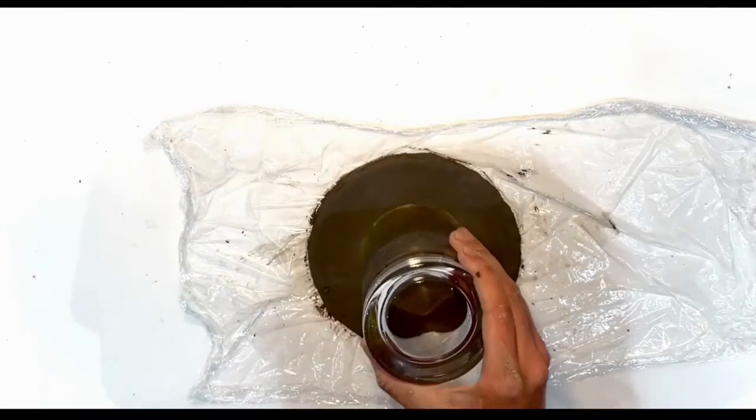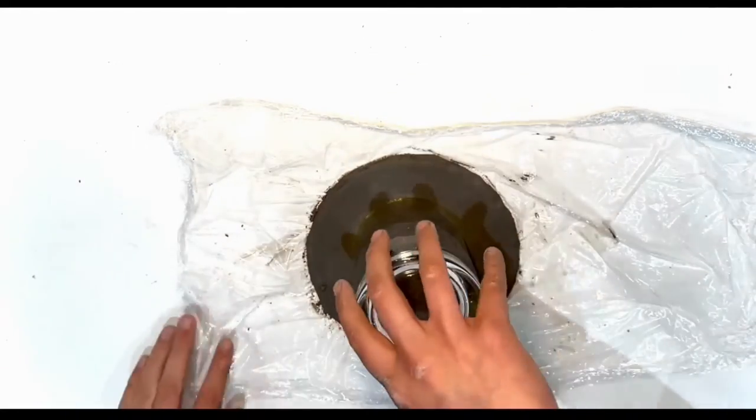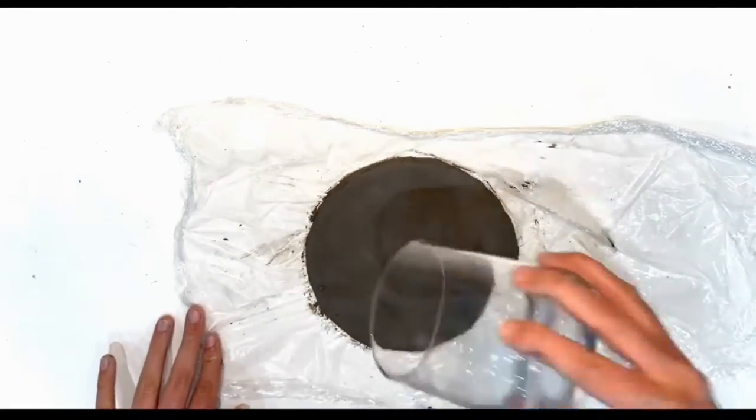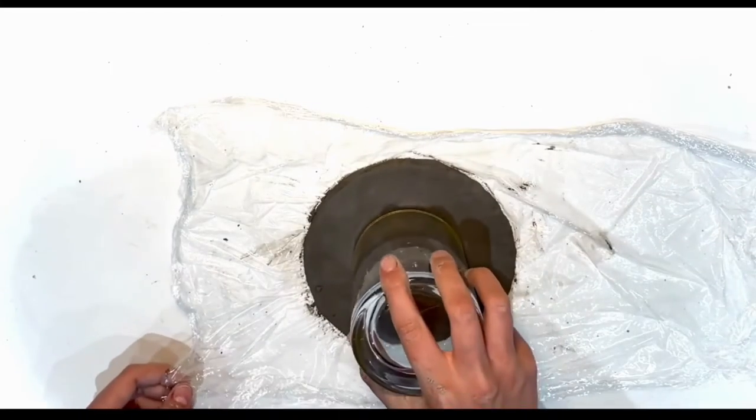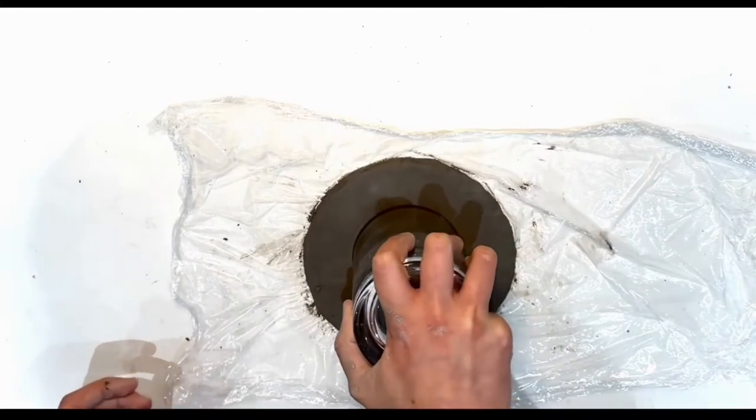Start cutting around the edge again just to make sure it's as neat as possible. Then take your second biggest circular object, mine being the cup, and make sure it's in the center of the clay and then cut it out.